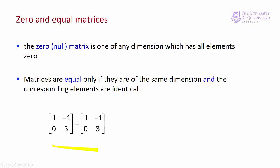So these two matrices are equal. These two aren't. They look similar, but the dimensions are different. This is a 2 by 3, and this is a 3 by 2.